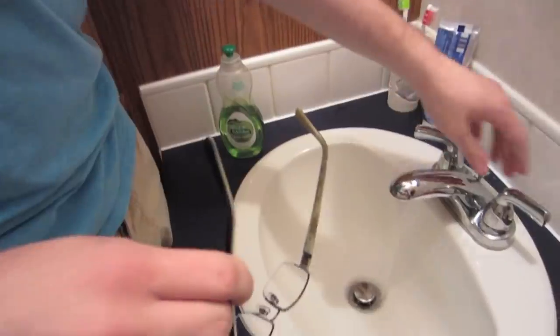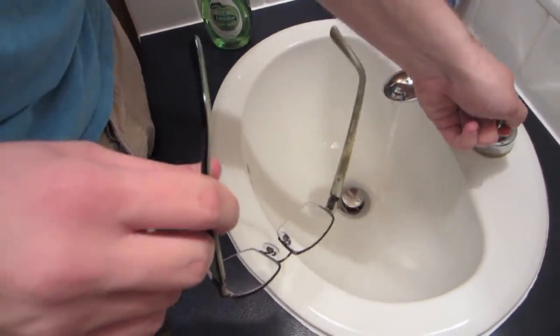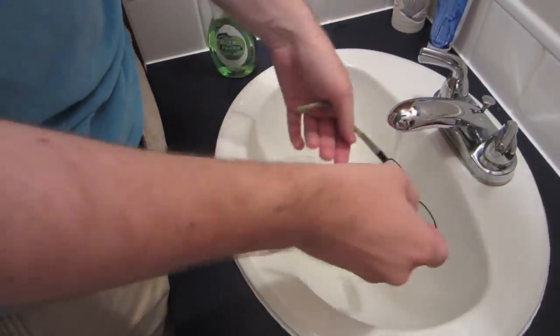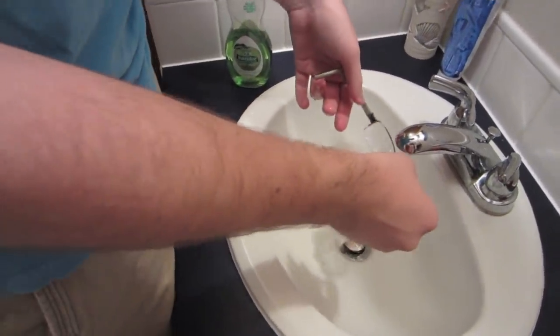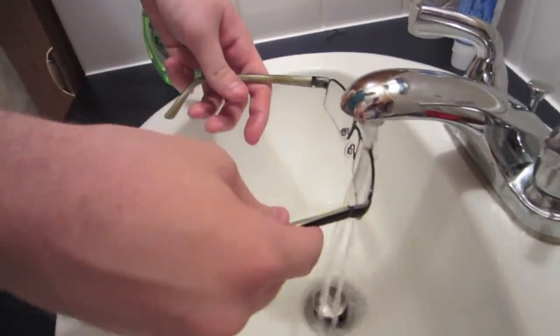So first you're going to want to run your glasses underwater. I just use semi-warm water. It doesn't have to be too hot, and you want to get both sides of the lens. You can do that by just running them under like that.